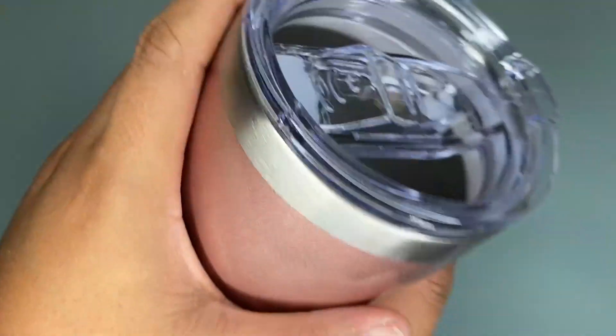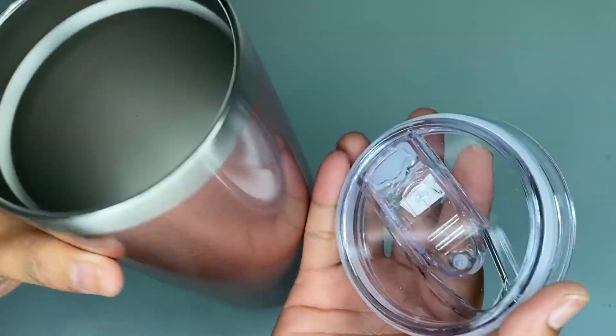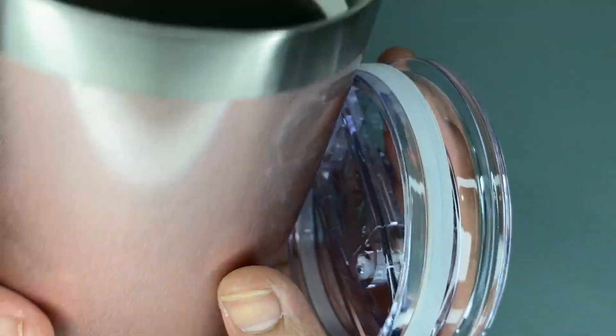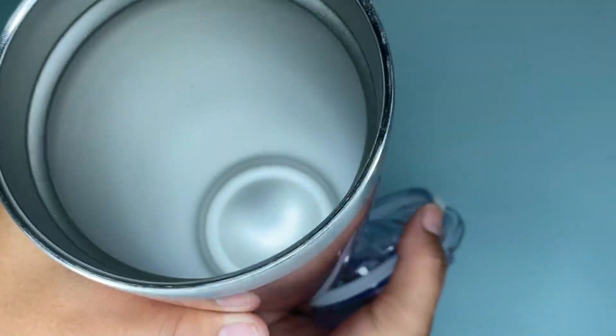As you can see, this is made of stainless steel and this is durable. This tumbler is 20 ounces capacity with double wall.